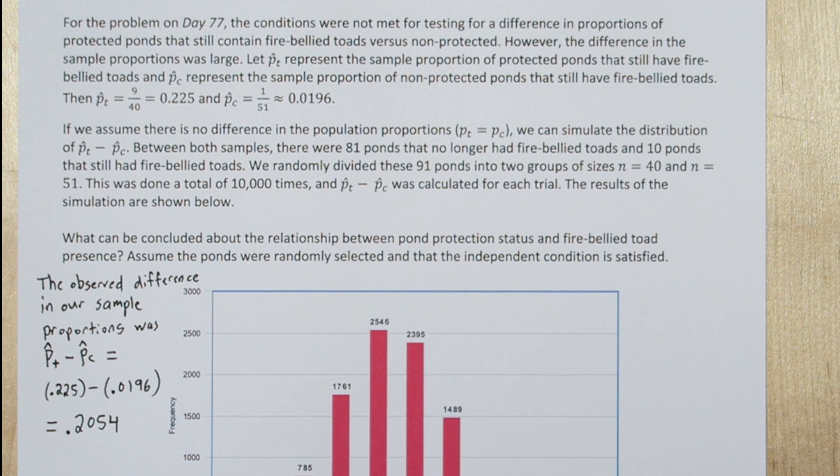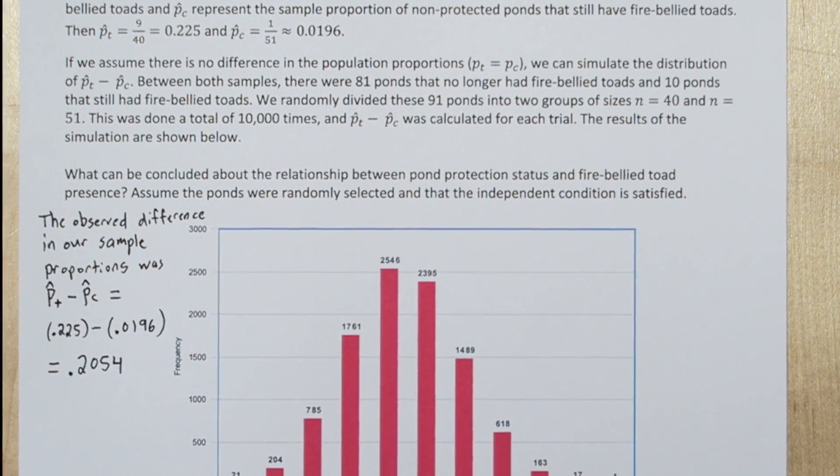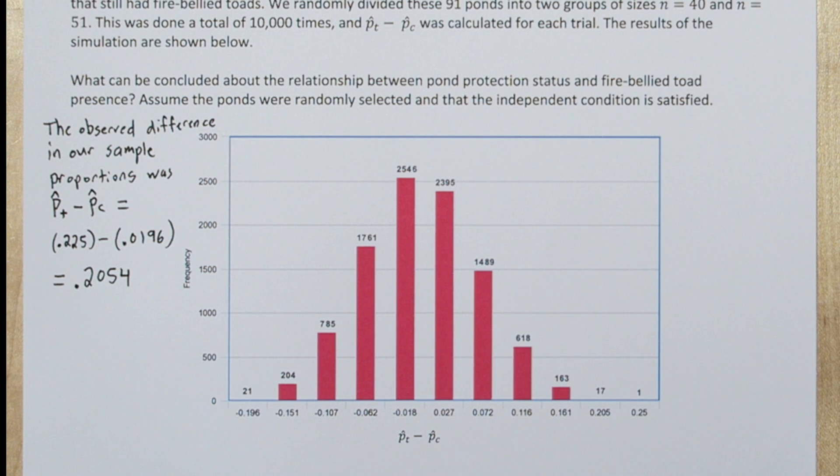Now if protection status has nothing to do with whether fire-bellied toads are present or not, it shouldn't matter which group the ponds with fire-bellied toads still left in them get thrown into. Then for each of the 10,000 simulations, they subtracted the two proportions. They saw what was the difference between the proportion of protected ponds with fire-bellied toads and the proportion of non-protected ponds.